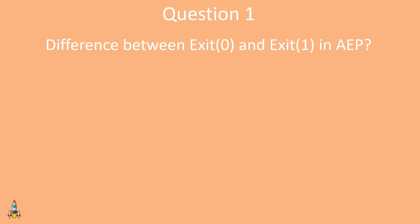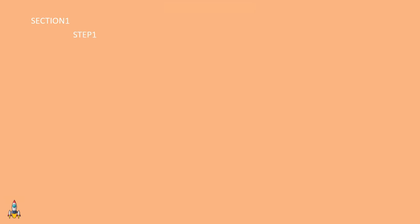Let's see a good example to understand the branching concept as well as the exit statements. Let's say we have an application engine with section 1, step 1, and two actions. Action 2 is a dynamic call section. Similar to exit statements, dynamic call section is also a branching construct because based upon the programming logic, action 2 can call section 2, section 3, or section 4, creating logical branch-like structures.